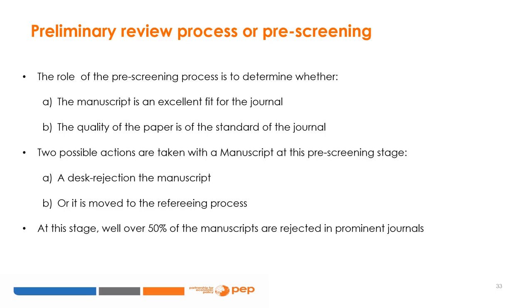A decision is usually reached within one week, but it could be much longer depending on the journal. At this stage, given that journals face limited space allowance, a paper is rejected because it is outside the area of coverage of the journal, it is below the standard of papers published in the journal (which often means the research question is deemed poorly conceptualized), or it is judged to make only a marginal contribution to the field. Well over 50% of initial submissions are desk rejected.